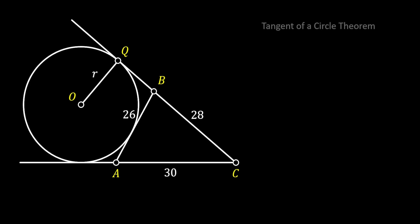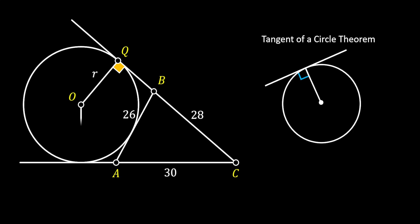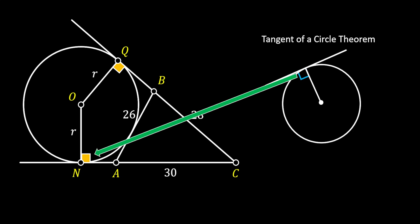We will use the tangent of a circle theorem, which states that if we have a circle and a tangent line and we pull a radius to the point of tangency, this radius will always be perpendicular to our tangent line. So we can use this theorem since line Q is the tangent to our circle. Next, we are going to pull another radius from point O to the bottom tangent, and if we label the point of tangency as N, we can conclude that the angle at point N is also a right angle.